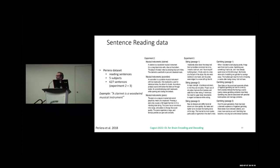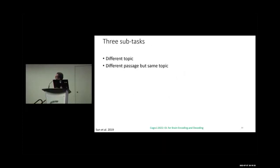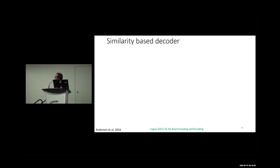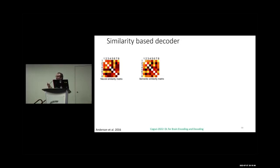Again the same subtopics — different topic, same topic different passage, sentences from same passage — were used. The similarity-based decoder doesn't build any model; it is completely based on correlations or representation similarity matrices. For eight samples, they construct an 8×8 matrix at the sentence level and another at the brain activation level.